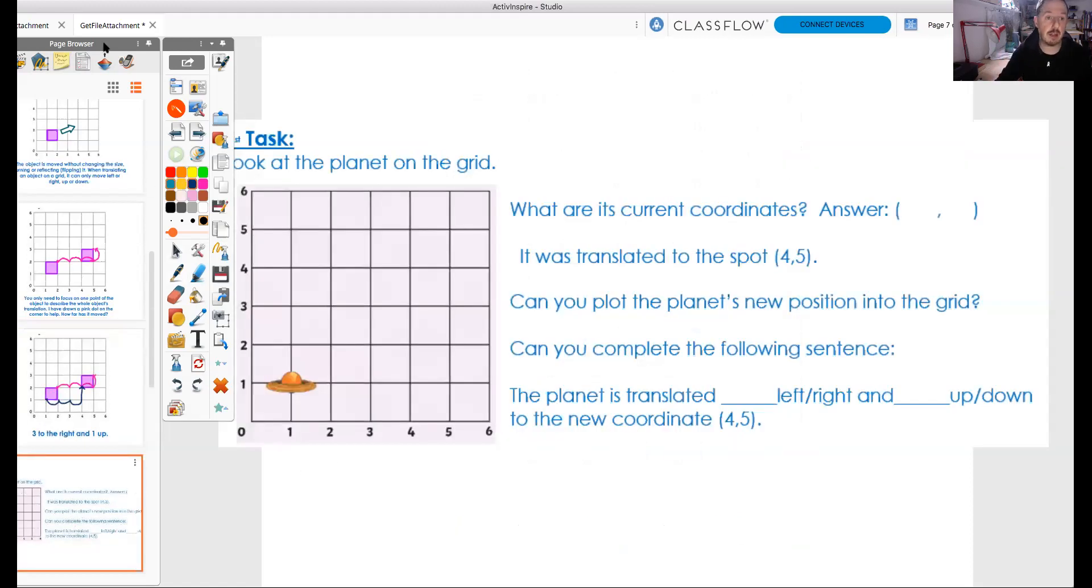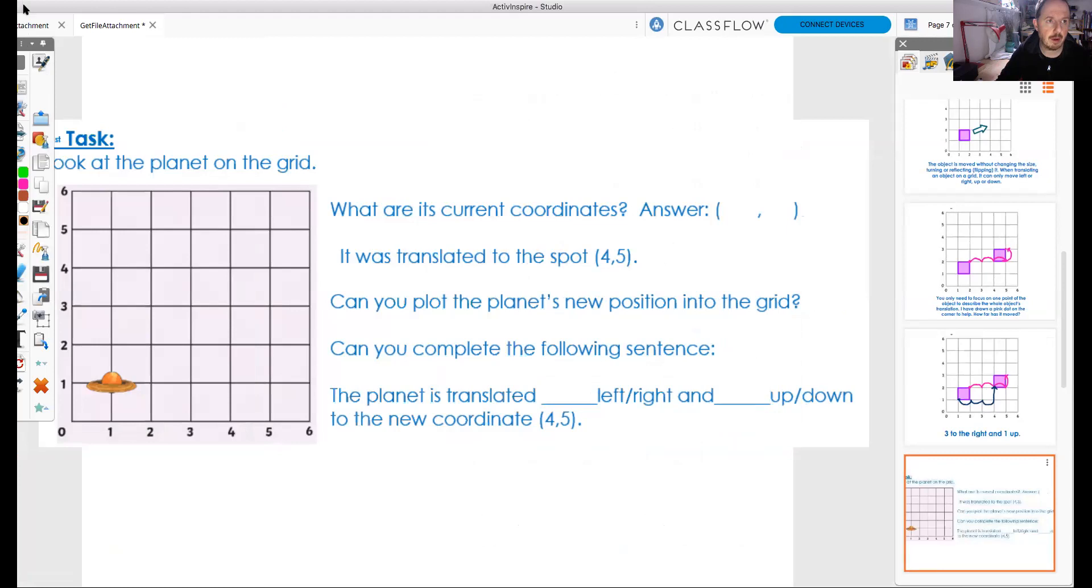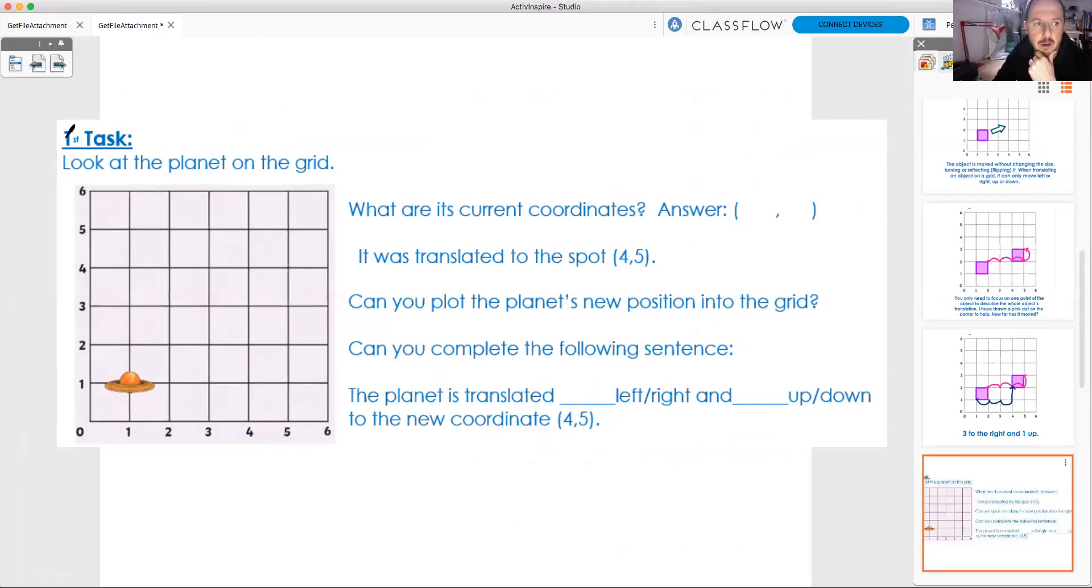Now, today, the first activity you've got proper today on your math sheet, it says, look at the planet on the grid. And here's a little planet, looks a little bit like Saturn, and it's on the grid. So, you have to work out its current coordinates. Well, let's do that together right now. Let's look at the x-axis, and then the y-axis, and write in the proper coordinates. And you can do this on your sheet with us. So, the x-axis, it's one along, and then it's one up. So, its current coordinates are one, one.